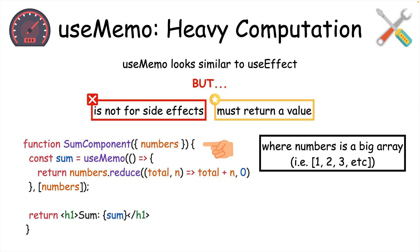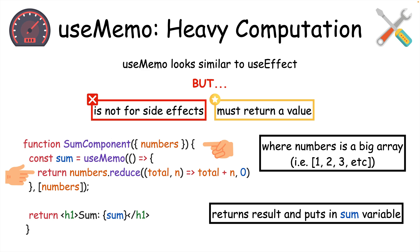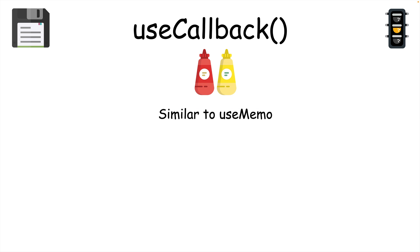A heavy computation that useMemo might do is calculate the sum of numbers in an array. It only reruns this function when the numbers array changes, and it puts the computed result in the sum variable.